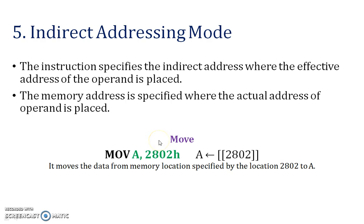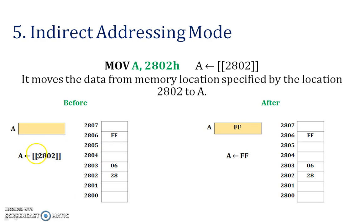Next — indirect addressing mode. In indirect addressing mode, an address is stored inside another address. Here you can see that 2802 is one address stored in the accumulator. Address 2802 holds 8-bit data: the binary of 2 and binary of 8 are merged to form 8-bit data, plus one increment gives 2803. Merging those binary numbers for 0 and 6 finally gives 2806, which is our effective address. The data at 2806 is FF. So indirect addressing mode means an address is stored inside another address.